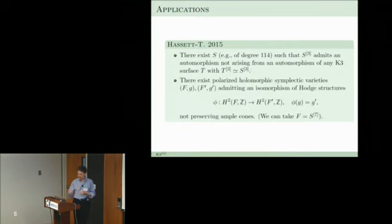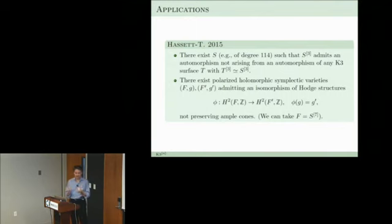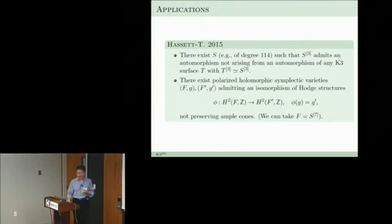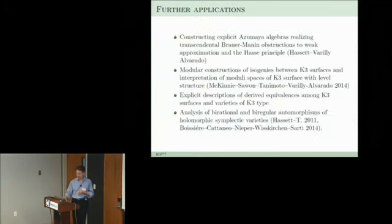Finally, this really shows that the original idea — that maybe H2 and the quadratic form characterize the cones — fails: there is a theorem that you can actually get holomorphic symplectic varieties where there is an isomorphism of Hodge structures mapping one polarization to the other but not preserving the ample cones. We have an example for Hilb^7 where we can do that.